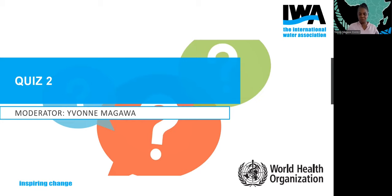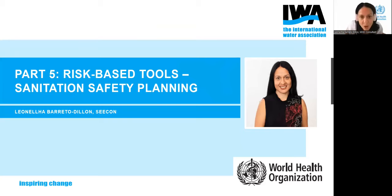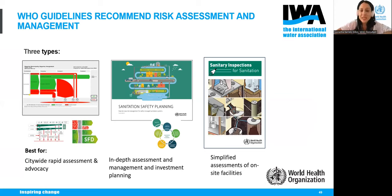I'm here to introduce one of the WHO recommended risk assessment and management tools, which is called Sanitation Safety Planning. With this tool, we can do an in-depth assessment and prepare a management and investment plan. SSP is different from the SFD or excreta flow diagrams, which are used for rapid assessment with advocacy purposes. It is also different from sanitary inspection forms used to conduct a simplified assessment of on-site facilities. The SSP is a step-by-step approach for local risk assessment and management along the entire sanitation service chain that results in identification of the highest health risks to plan improvements.